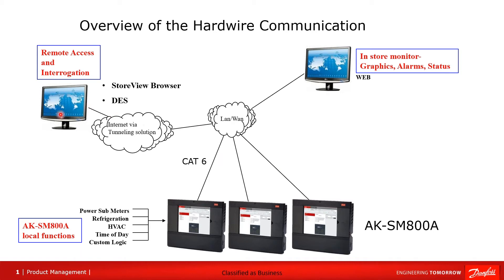The other option is access from outside of the site — this would be Danfoss having access to a customer's stores or their network of stores. We do that through a tunneling solution or some sort of firewall. If you agree to a tunneling solution between the customer and Danfoss, you can create throughput into their local area network, giving access to the controls. The CAT6 cables also allow the controls to talk between each other as they pass information back and forth.